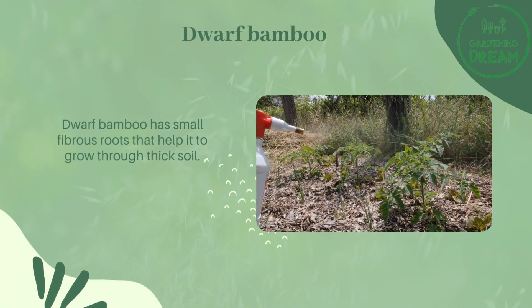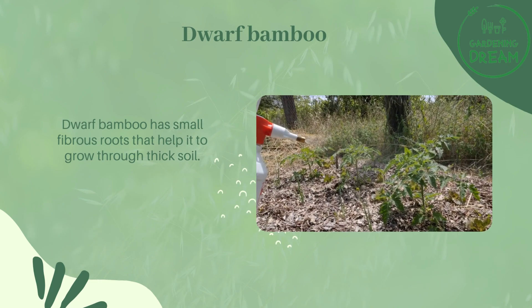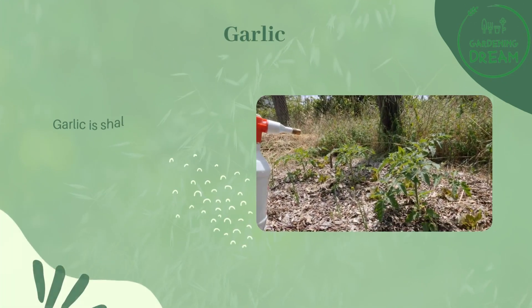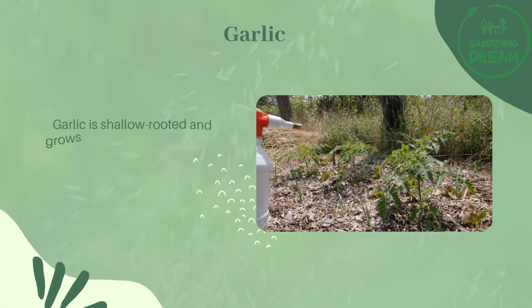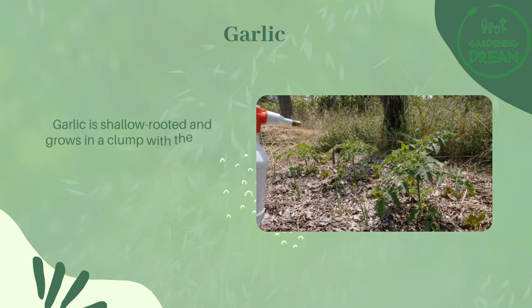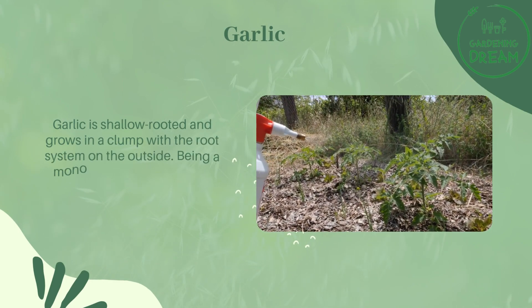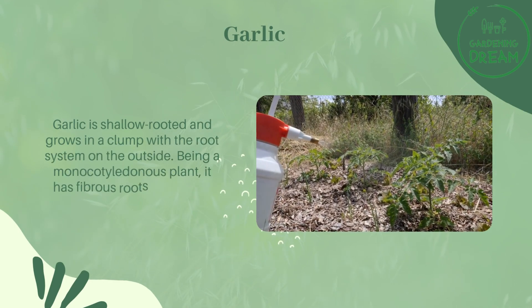Dwarf bamboo has small fibrous roots that help it to grow through thick soil. Garlic is shallow-rooted and grows in a clump with the root system on the outside.